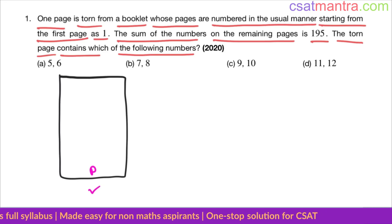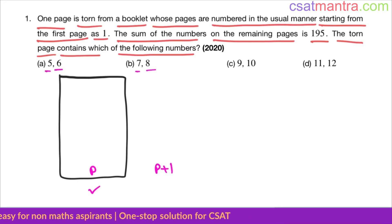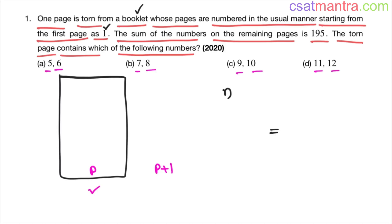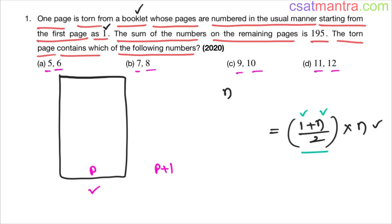Let's say this is the torn page. If one side is numbered as p, then the other side would be p plus 1. Now, the booklet has n pages in total, and the pages are numbered starting from one. The sum of n numbers equals the average of the first and last number — that is (1 + n)/2 — multiplied by the number of terms. This is the formula from the sequences and series chapter for an arithmetic progression, which simplifies to n(n+1)/2.